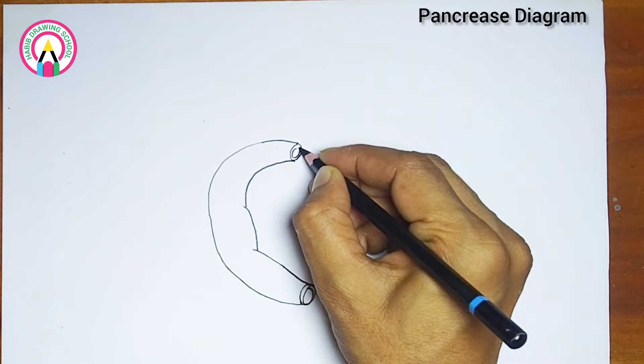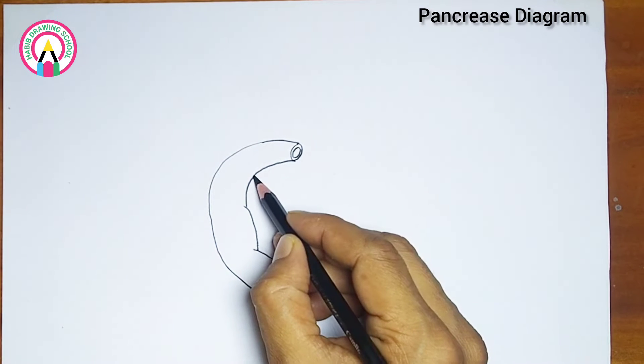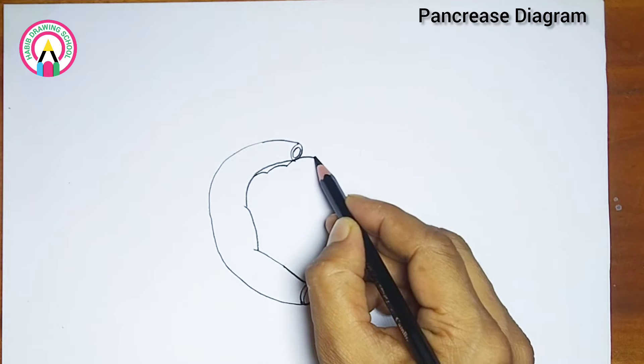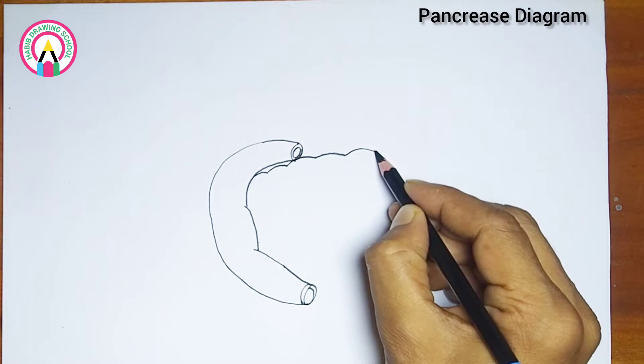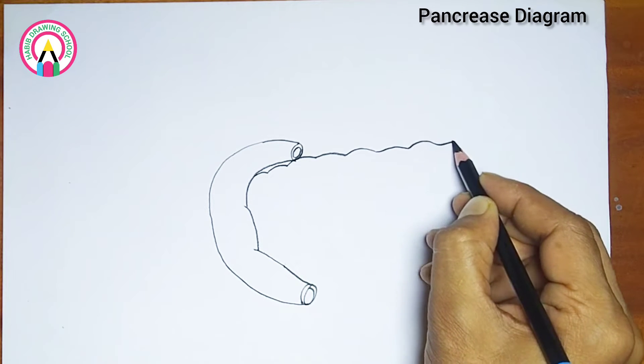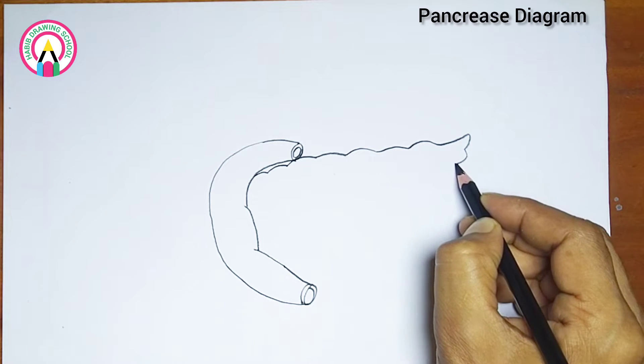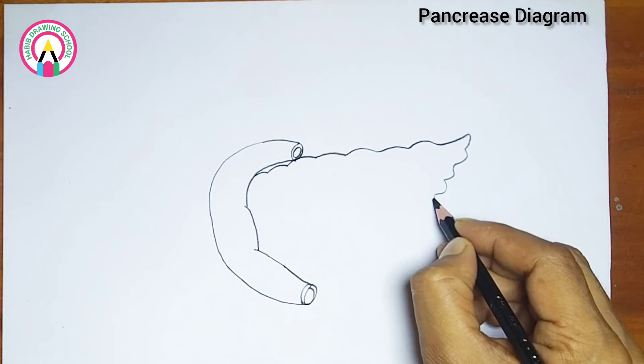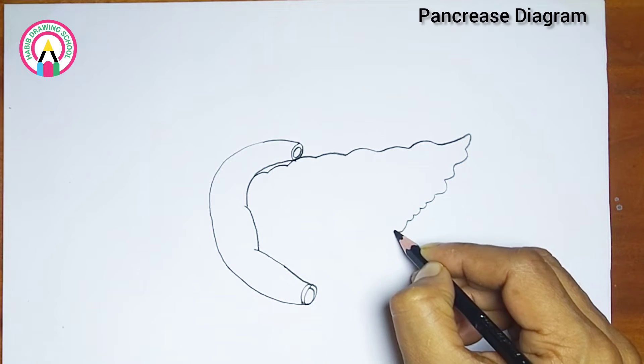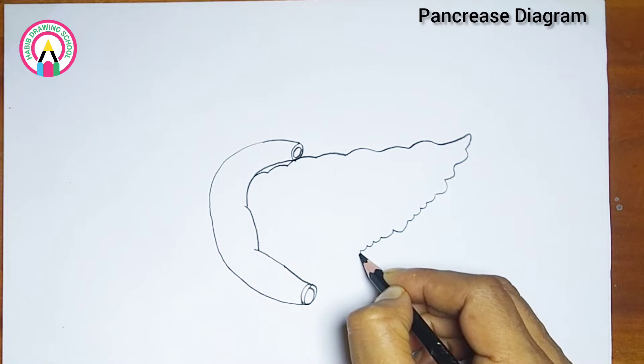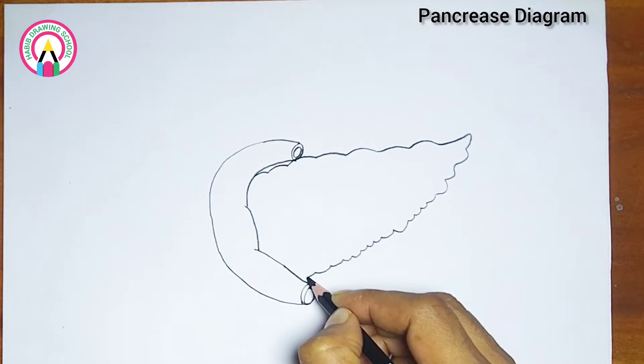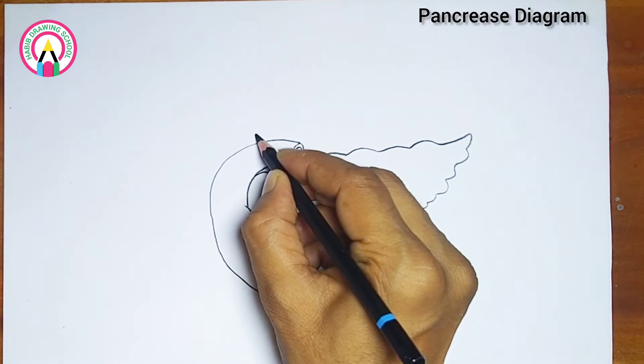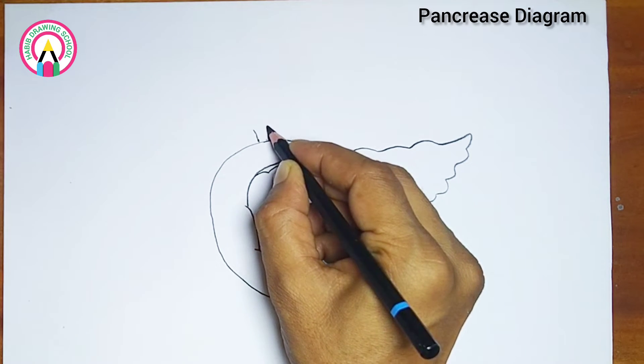The pancreas is situated in the upper abdomen, behind the stomach and in front of the spine. It extends horizontally across the abdomen, with its head nestled in the curve of the duodenum, the first part of the small intestine, and its tail reaching towards the left side of the abdomen.